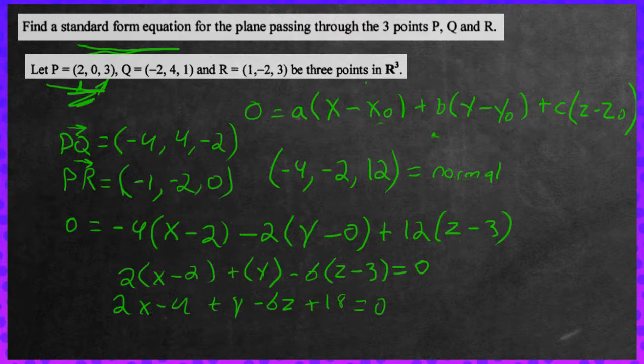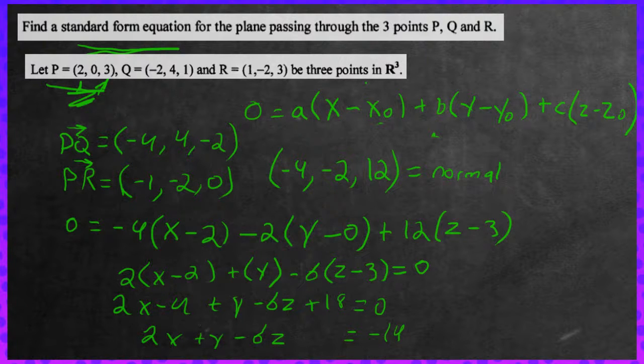So let's put all of our constants to the right-hand side. We would get, well first off, 18 minus 4 is 14. Put it to the other side, you get negative 14. So negative 14 over here. Over here on the left-hand side, we have 2X plus Y minus 6Z. And this would be the equation for the plane. If you have any questions, feel free to ask in the comment section below. And I thank you for watching.